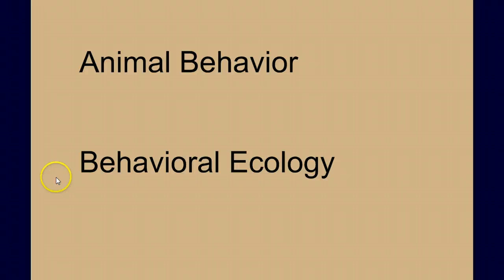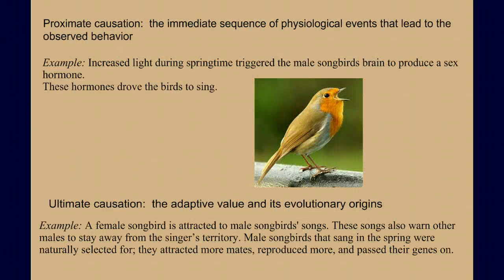In biology, when we discuss animal behavior, we always need to look at the two types of causes of animal behavior. The proximate causation is the immediate sequence of physiological events that lead to the observed behavior. For example, when we look at songbirds and why they sing, the male birds will sing in the springtime, but that singing is triggered by a change in hormone level. That's the direct cause of the behavior — the hormones drive the birds to sing.